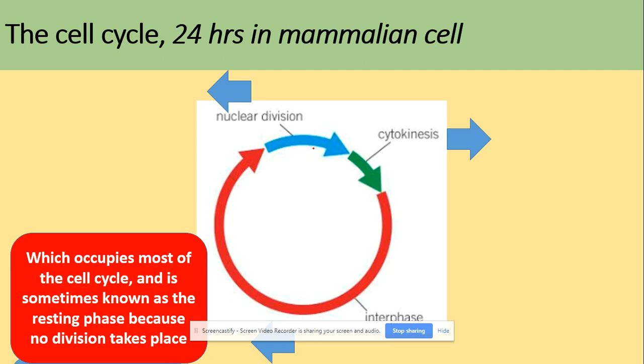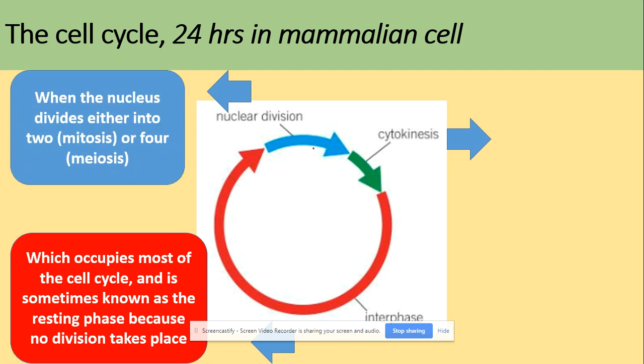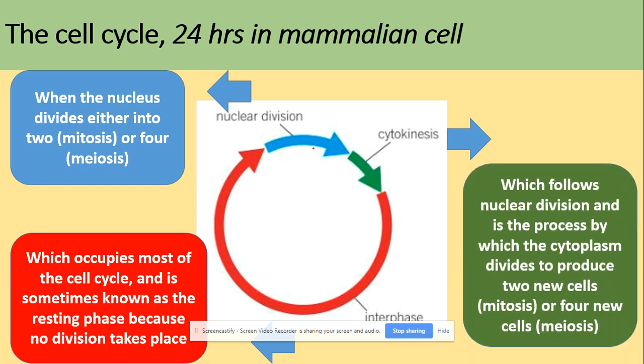Next we have nuclear division, which is the process where the nucleus divides. Here we could have two processes: mitosis, which produces two genetically identical cells, or meiosis, which produces four genetically different daughter cells. And finally cytokinesis, which is the process after nuclear division that leads to division of the cytoplasm.